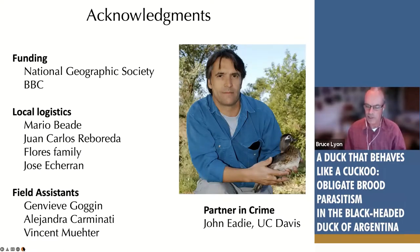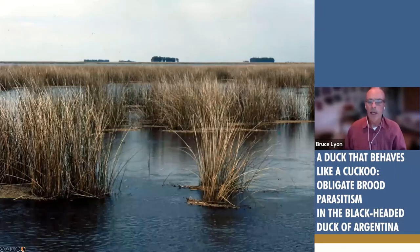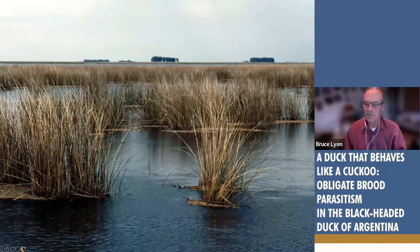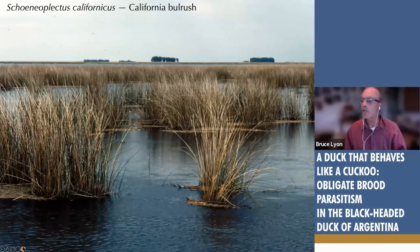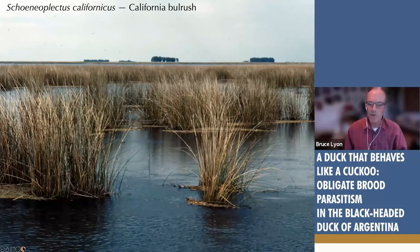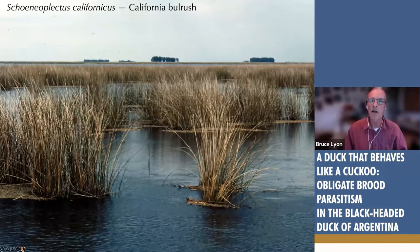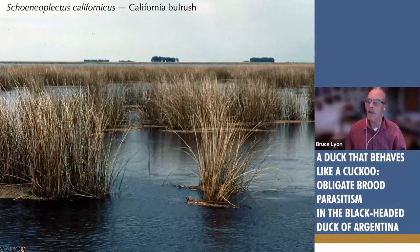We've actually been collaborating for 40 years, and this was a really fun project. Let's start with a quiz. This is a wetland — we all have wetlands like this. This plant is the California bulrush, which might give you a hint about where we are. Marshes around the world look pretty similar, but this is our local bulrush, and those are eucalyptus trees in the background.